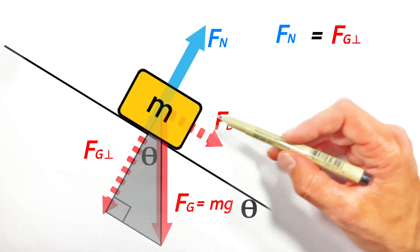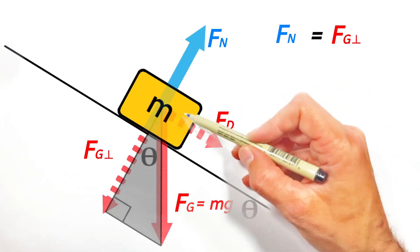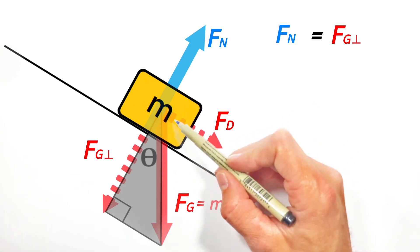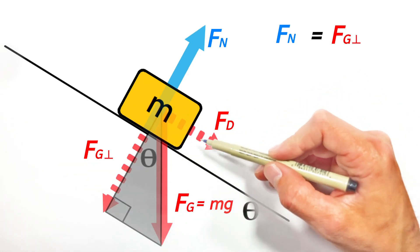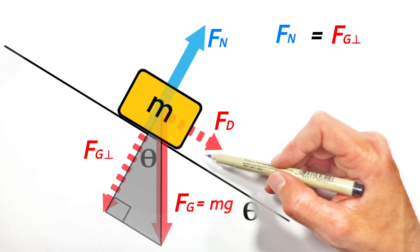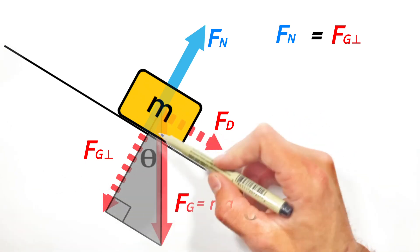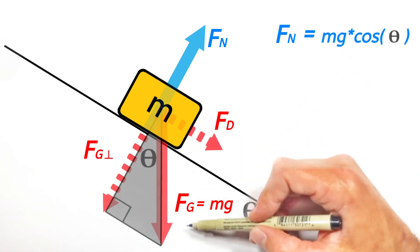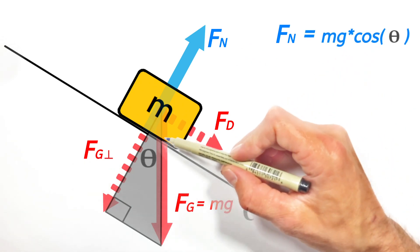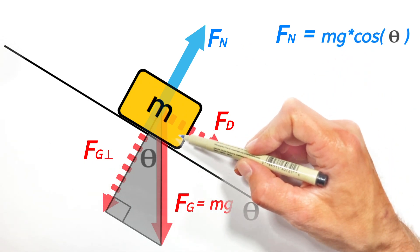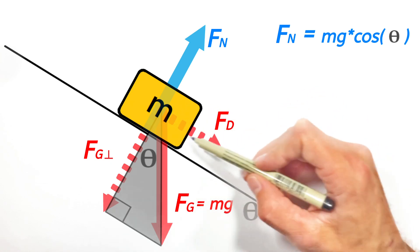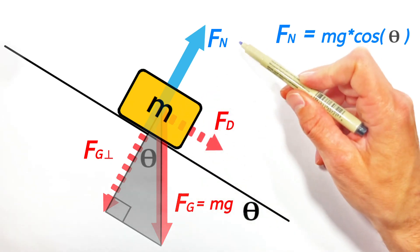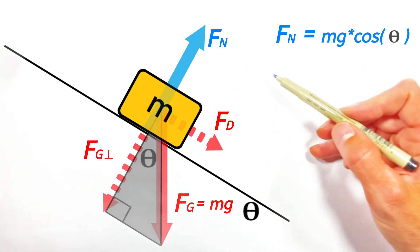So looking at this as a right triangle, we have an angle and a hypotenuse, and this component right here is the adjacent side. Or really, we could say that this component right here, which we know is equal to the normal force, is equal to Mg, the hypotenuse, multiplied by the cosine of this angle. Ultimately, what that means is for this block on the hill, the normal force is equal to Mg cosine theta.